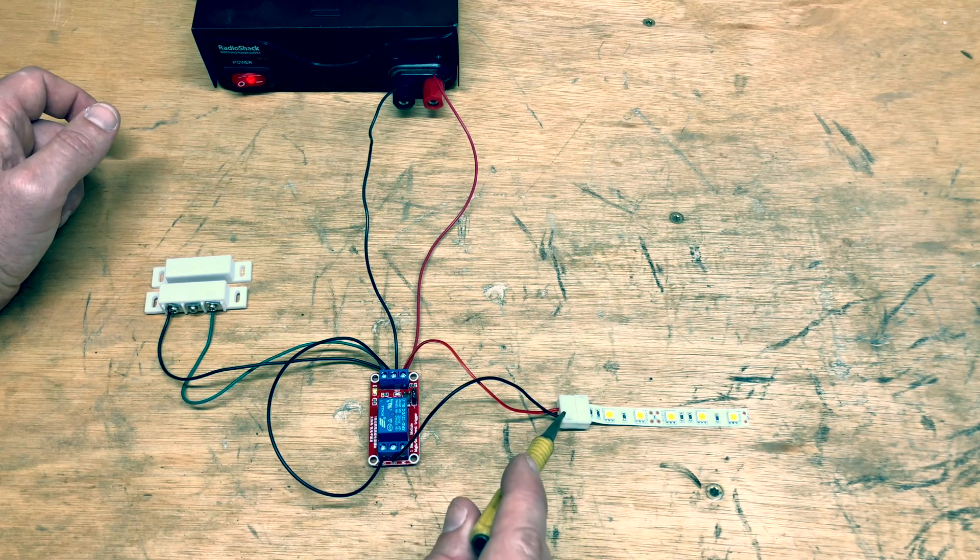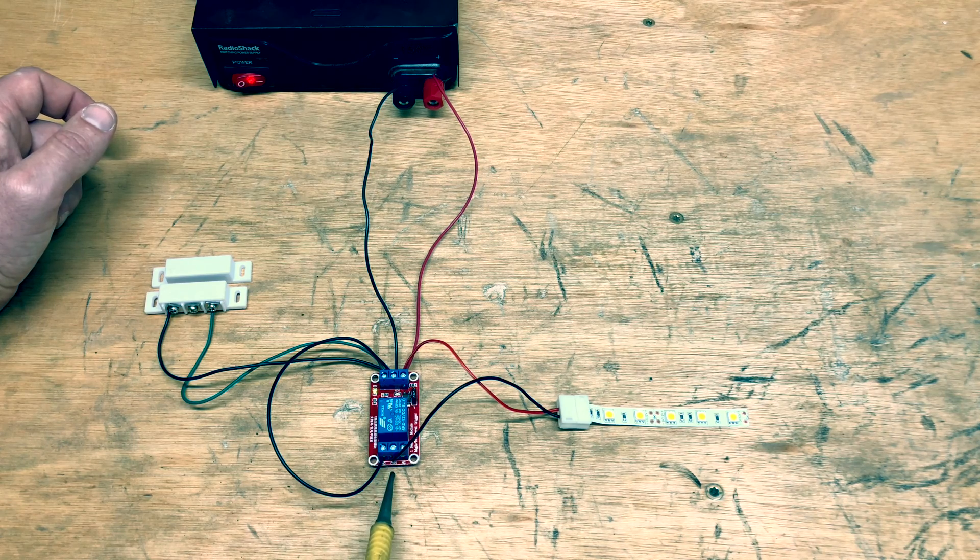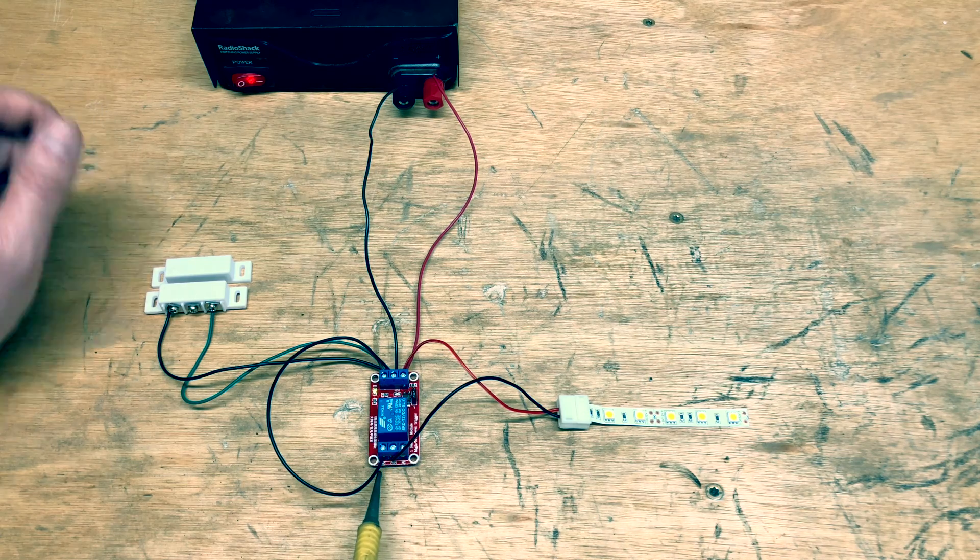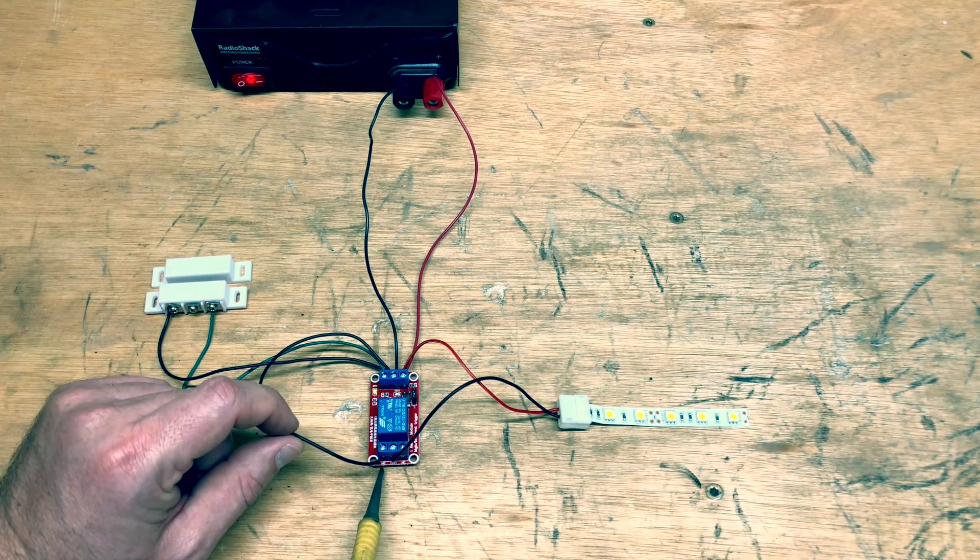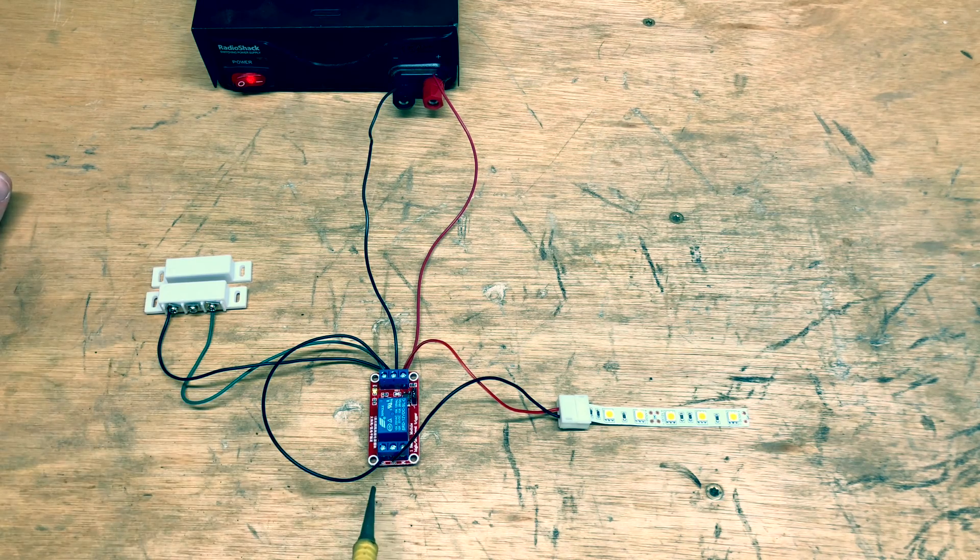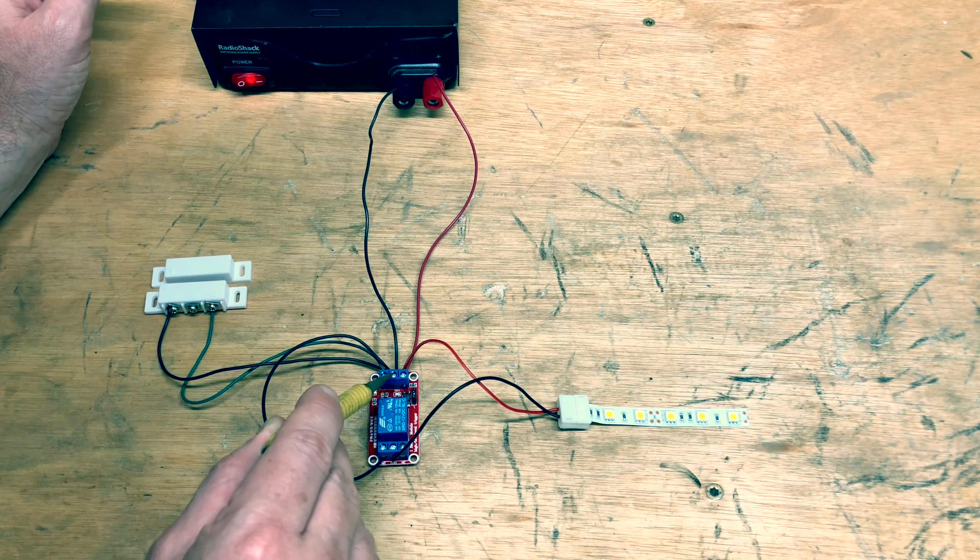And then the negative of the LED strip comes over here to the other side of the relay and this is labeled common COM. Now this terminal labeled normally open on the relay goes back around to the middle of the terminal back here which is DC minus.